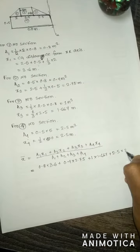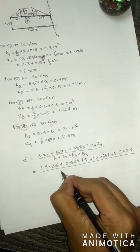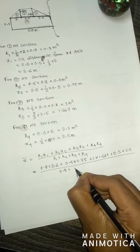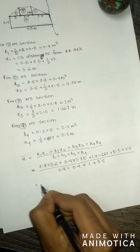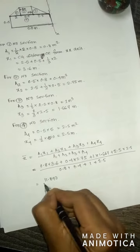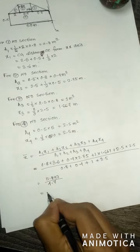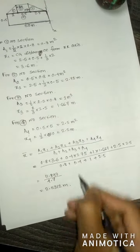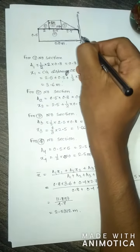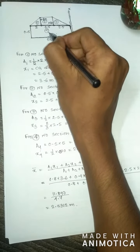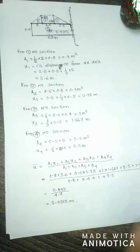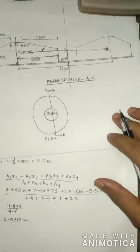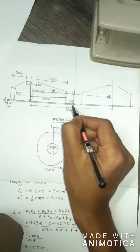x-bar equals (0.8 × 3.6 plus 0.4 × 2.75 plus 1.0 × 1.667 plus 2.5 × 2.5) divided by (0.8 plus 0.4 plus 1.0 plus 2.5), equal to 11.897 divided by 4.7, equal to 2.5312 meters from the XX axis.